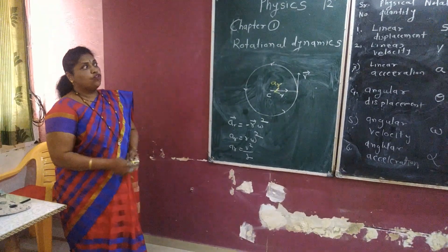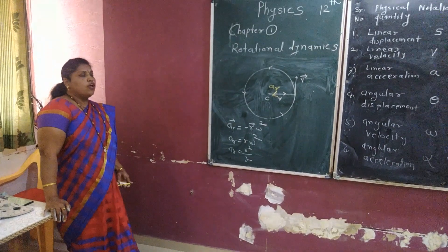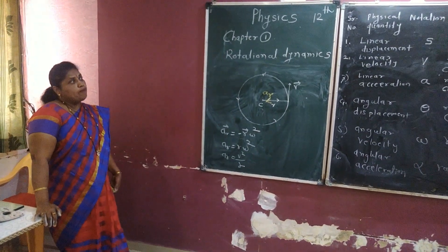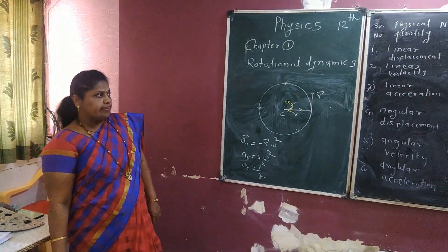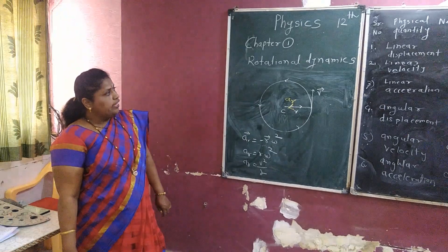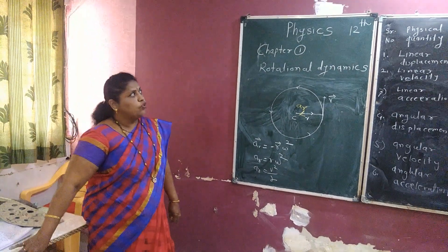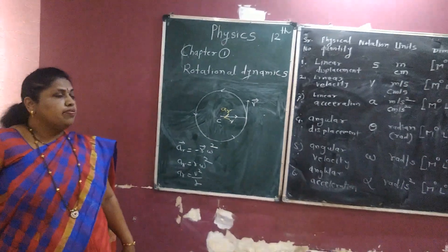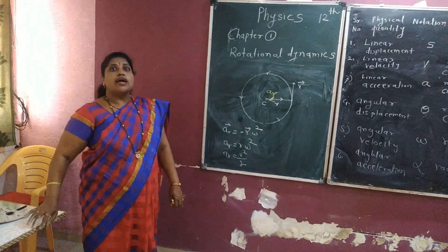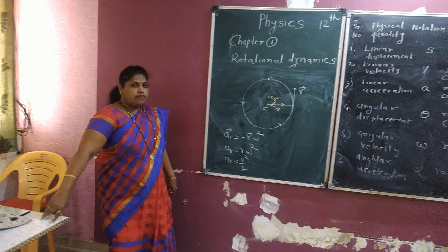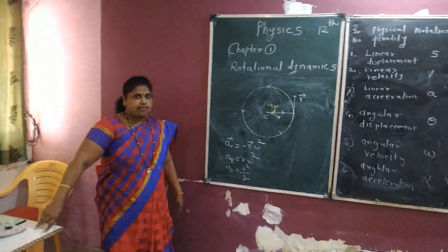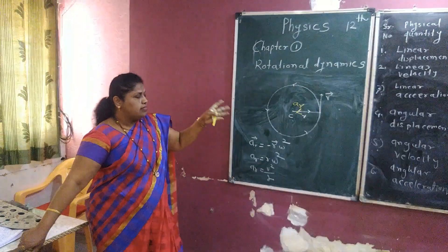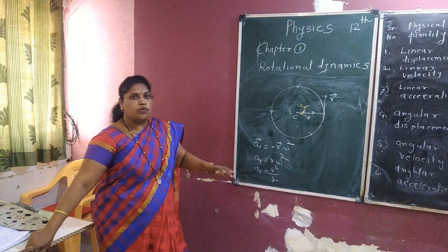Then we look at uniform circular motion. In uniform circular motion, the motion of a particle along the circumference of a circle with constant linear speed. Examples of uniform circular motion include the second hand of a clock, the minute hand of a clock, the hour hand of a clock, and the Earth revolving around the Sun — which completes one revolution in 24 hours. These are examples of uniform circular motion.